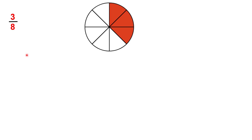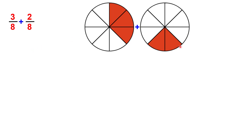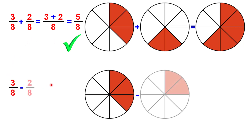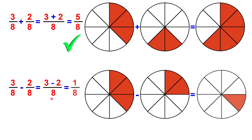Another example: 3 over 8 plus 2 over 8. You can see it here — 3 and 2. So the result will have 8 as a denominator, and you just sum the numerators: 3 plus 2 is 5. So 5 over 8. And you have it here on the right-hand side. Let's subtract it: 3 over 8 minus 2 over 8. You can see it here — you had 3, 2 were subtracted, so you're left with 1. 3 minus 2 is 1. The denominator is the same, of course. 1 over 8 is the result.